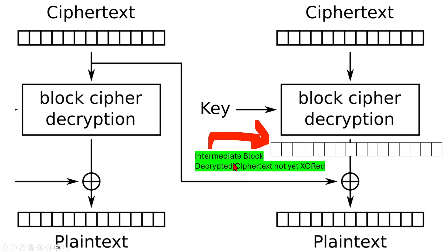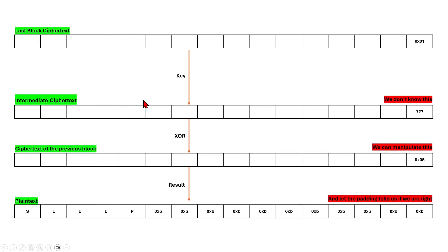We want to get this intermediate block so we can use it to XOR with the ciphertext of the previous block to get the plaintext. We don't know what the intermediate text is, but we can manipulate the ciphertext of the previous block and let the padding error tell us we are right. We can get the byte that way.